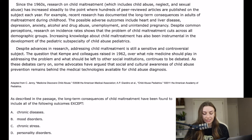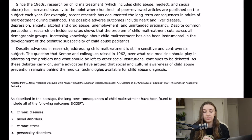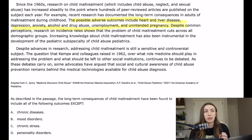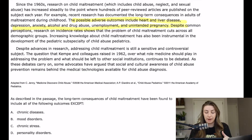Just looking at the answer choices — chronic disease, mood disorders, personality disorders — I think it's talking about this sentence: 'The possible adverse outcomes include heart and liver disease, depression, anxiety, alcohol and drug abuse, unemployment, and unintended pregnancy.' I'm supposed to go through all of those outcomes and match them up to the answer choices.